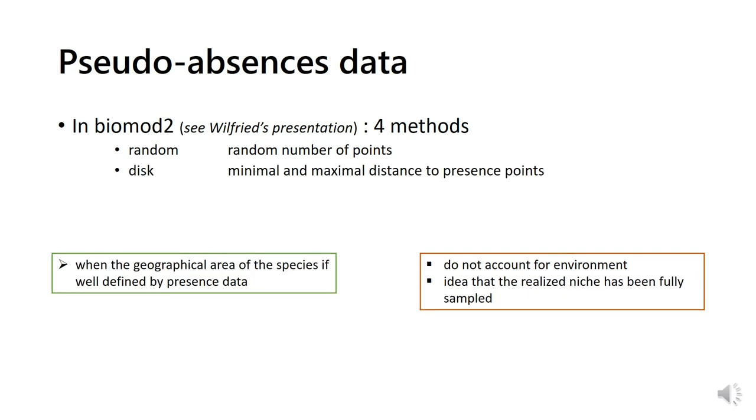The disk method, with which the absences are drawn within disks around presence points, defined by minimal and maximal distance, should be used when the geographical area of the species is well defined by the presence data. So it does not account for environment, since it relies on the assumption that the realized niche of the species has been fully sampled, and therefore its environmental conditions. Beware, if used while the sampling was not exhaustive, it will reinforce this bias.